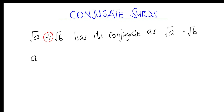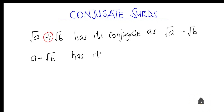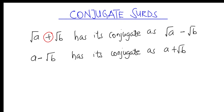Similarly, if you have something like a minus square root of b, to find its conjugate you change the sign in between to its opposite. The opposite of minus is plus, so a − √b has its conjugate as a + √b. That is all about conjugate surds. Now let's take some illustrative examples.